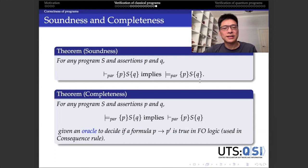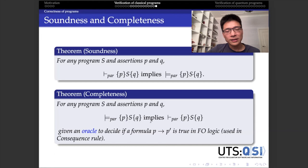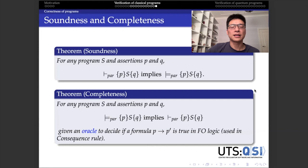One of the most important results in classical Hoare logic is that the proof system is both sound and complete. Soundness means that for every correctness formula, if it can be proved in the proof system then it must be true semantically. Completeness says that if a formula is true semantically, then in principle it can be proved from this logic system. This concludes the introduction to classical Hoare logic. Any questions so far?